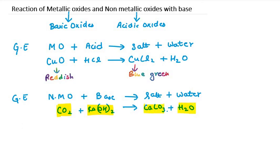So in each case you can see there is a formation of salt and water — whether we react metal oxide with acid, or whether we react non-metallic oxide with base, we get salt and water. In the last case as well, when we looked at how acids and bases react, we also get salt plus water. So that's all for today's lecture. Thank you for watching.